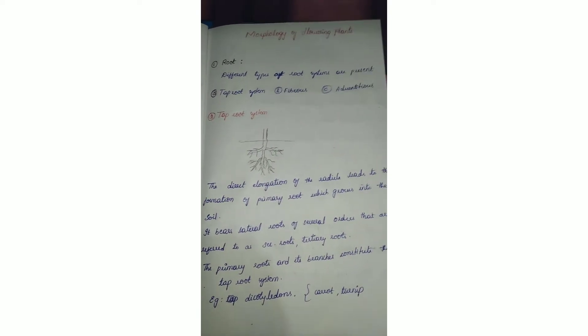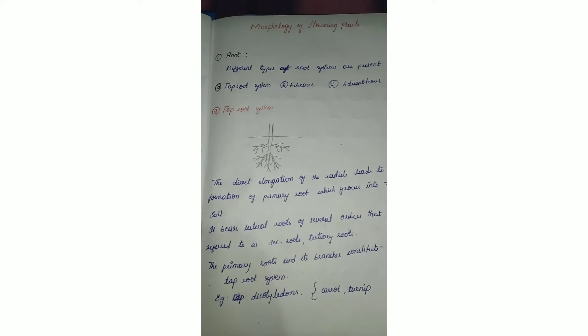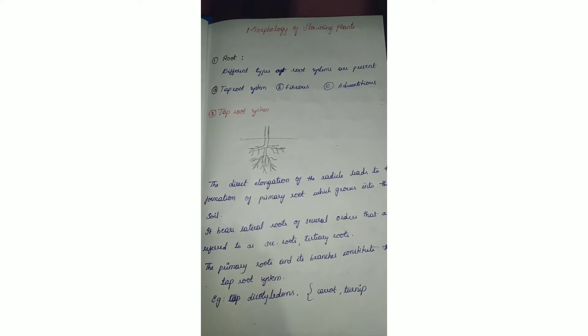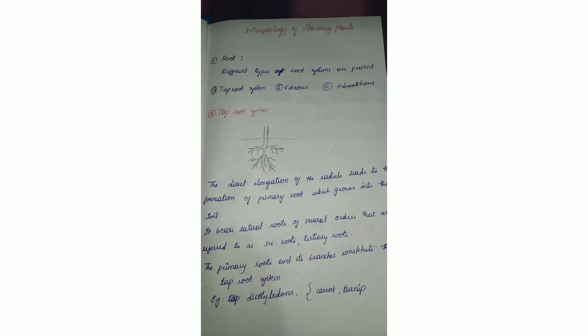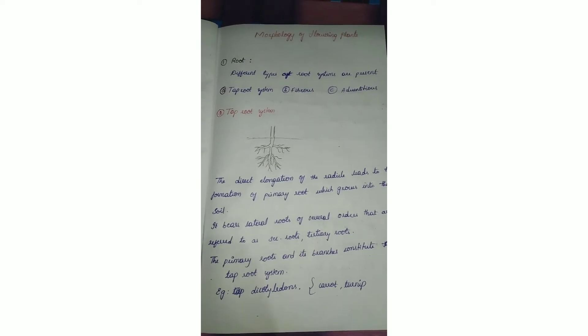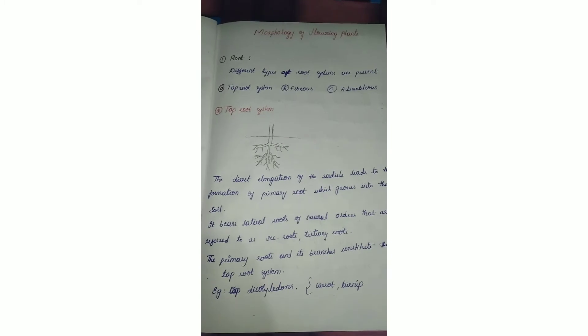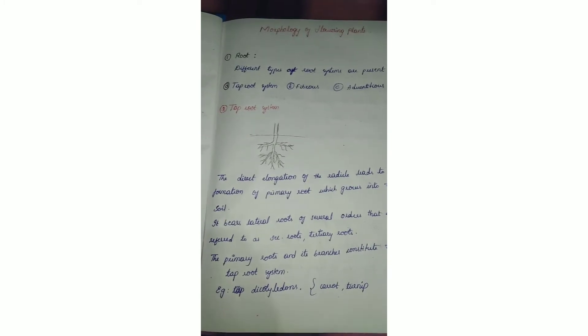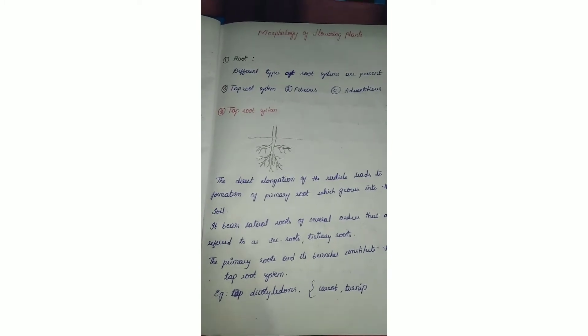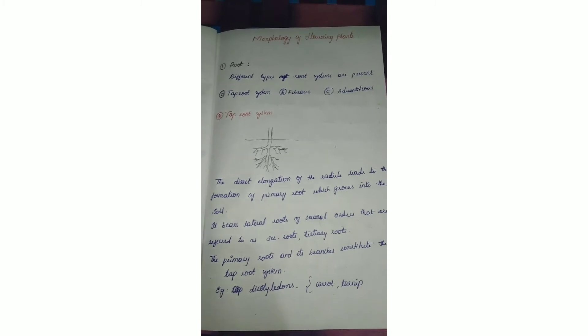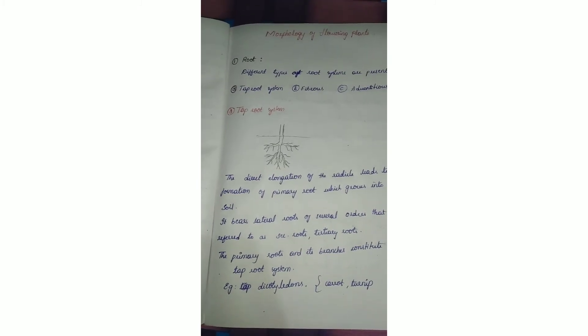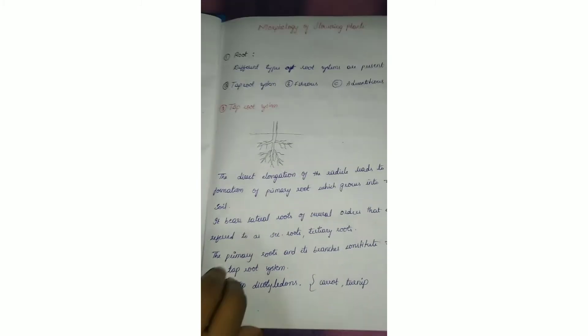It bears lateral roots of several orders that are referred to as secondary roots and tertiary roots. The primary root and its branches constitute the tap root system. Examples are dicotyledons like carrot and turnip.